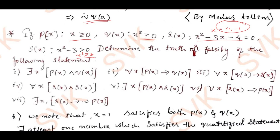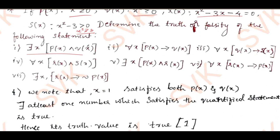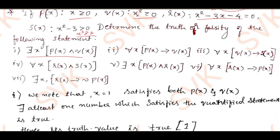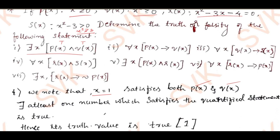Determine the truth or falsity of the following statements. Consider the first statement: there exists x, p(x) ∧ q(x). p(x) means x is positive and q(x) means squares of values are positive. Since 'there exists' means at least one value should satisfy, I consider x = 1. p(1) is positive and q(1): 1² is also positive. Therefore true ∧ true is always true. The given proposition has truth value true.